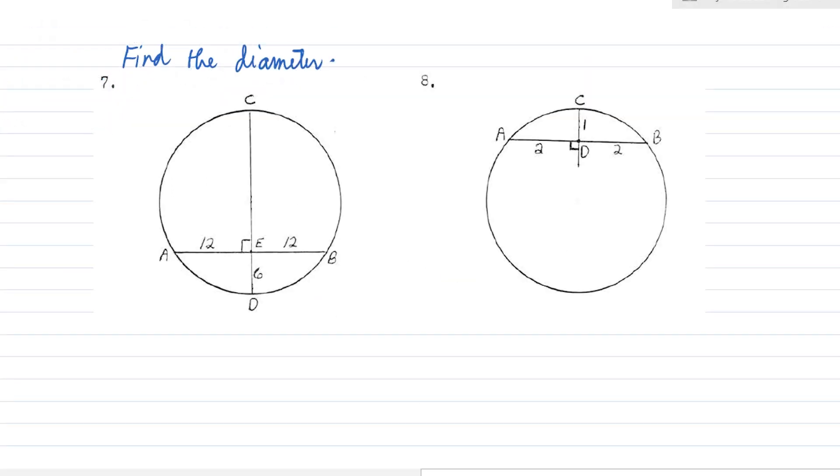For this example, let's look for the diameter. Well, in the book it says find the radius, but it's just twice that. We'll be applying theorem number three.